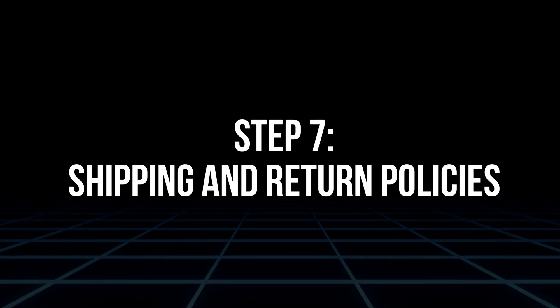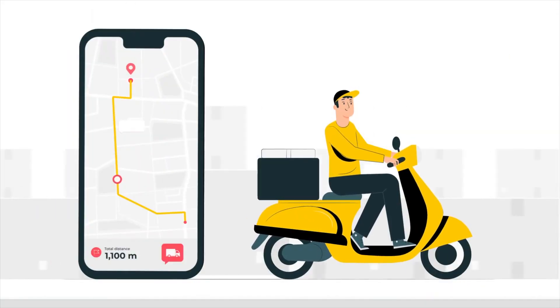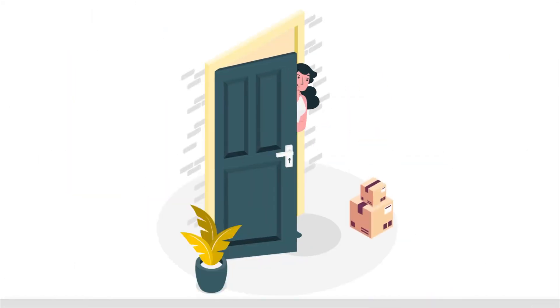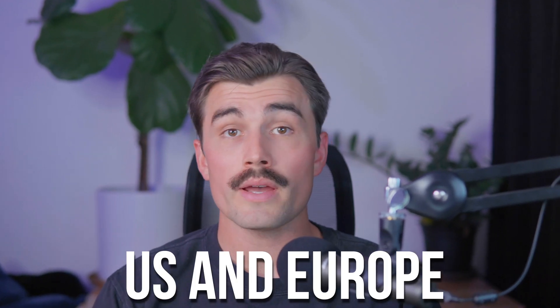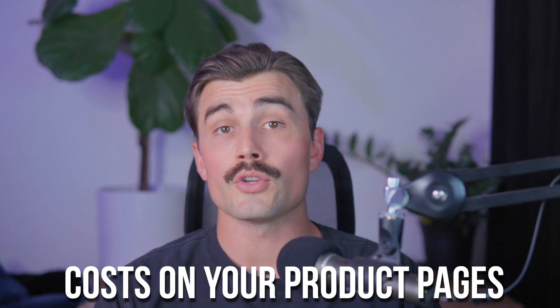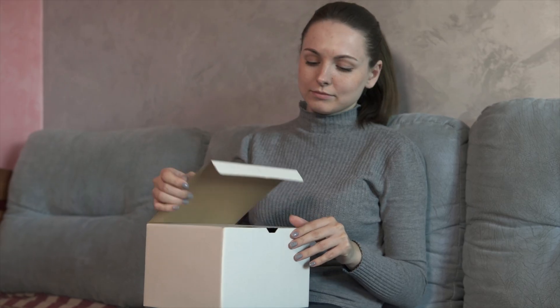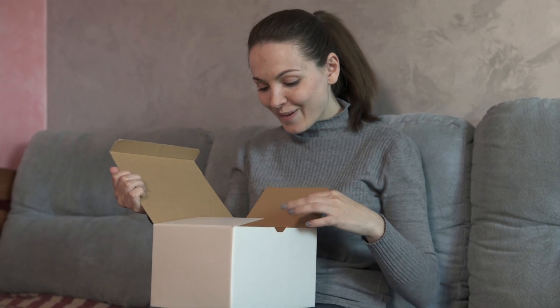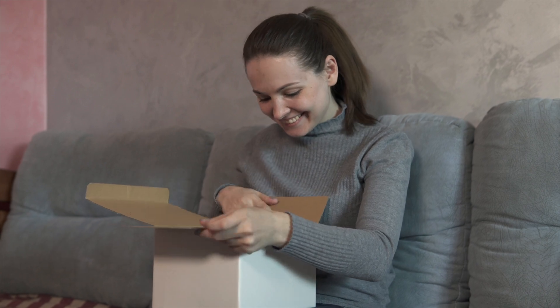Step seven: shipping and return policies. Shipping is one of the biggest concerns for customers, especially in the world of e-commerce. With Spocket, most suppliers are based in the US or Europe, meaning shipping times are relatively fast. Many products offer delivery within three to five business days, which can give your store a competitive edge. To further improve customer satisfaction, make sure to clearly communicate shipping times and costs on your product pages. This transparency helps manage expectations and reduces the likelihood of customer complaints.